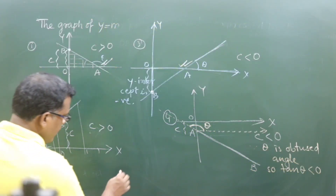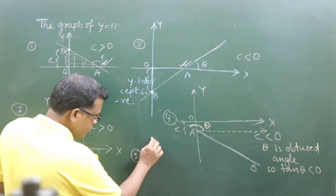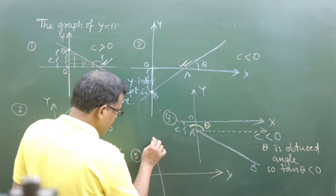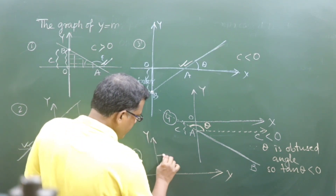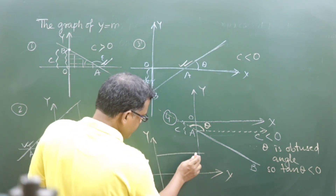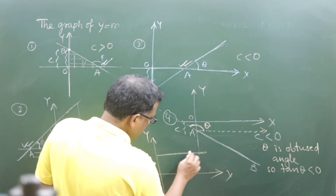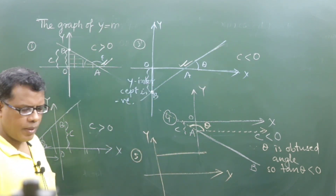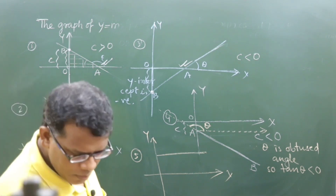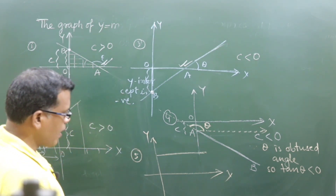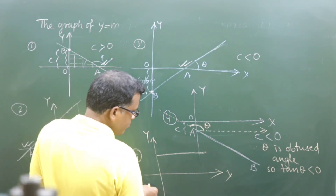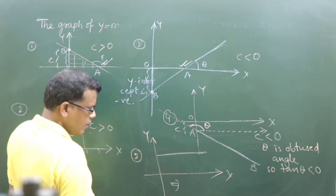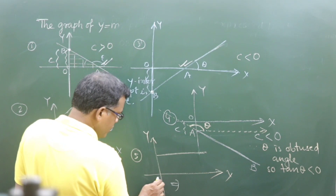Suppose, in a fifth variation, this is the x-axis, this is the y-axis. If I draw a line like this, then what will we say about the y-intercept as well as the slope of the line? When the line is parallel with the x-axis, in this case, definitely the slope is positive.